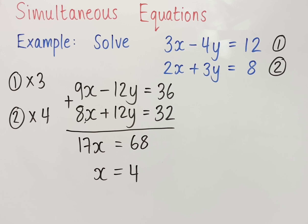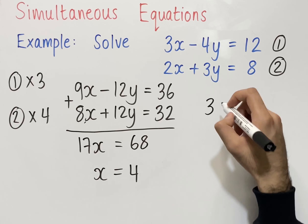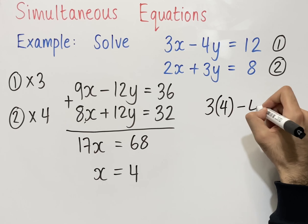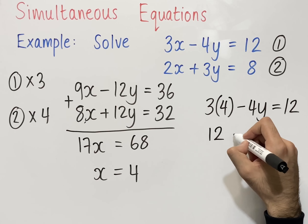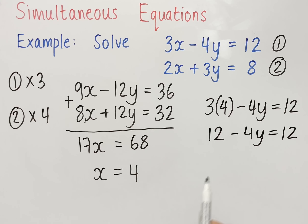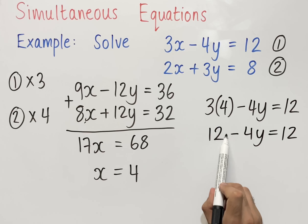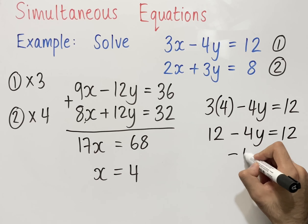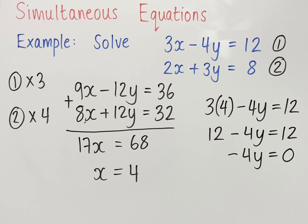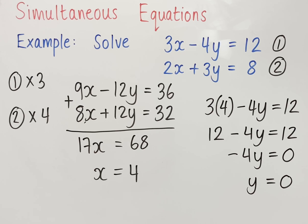To work out what y is, we substitute x equals 4 into the first equation: 3 times 4 minus 4y equals 12. So 12 minus 4y equals 12. Taking away 12 from both sides, the 12s cancel, leaving minus 4y equals 0. Dividing both sides by minus 4, y equals 0. So the solutions to these simultaneous equations are x equals 4 and y equals 0.